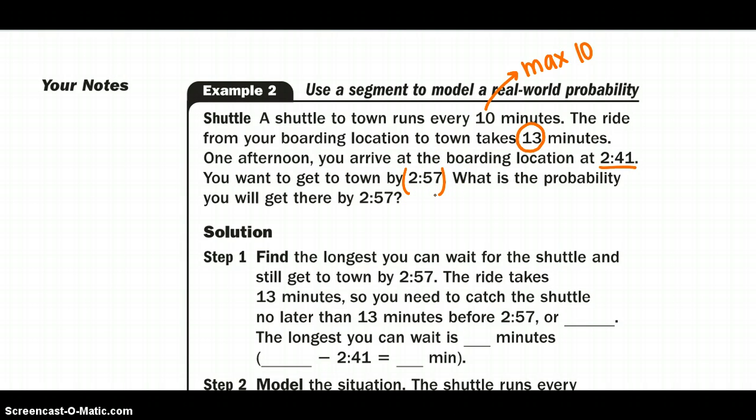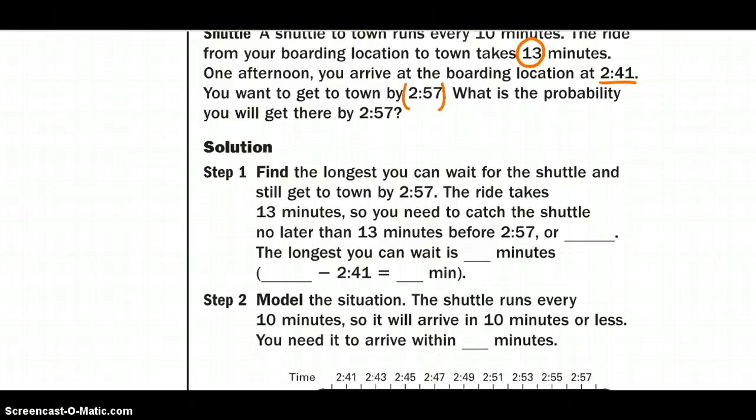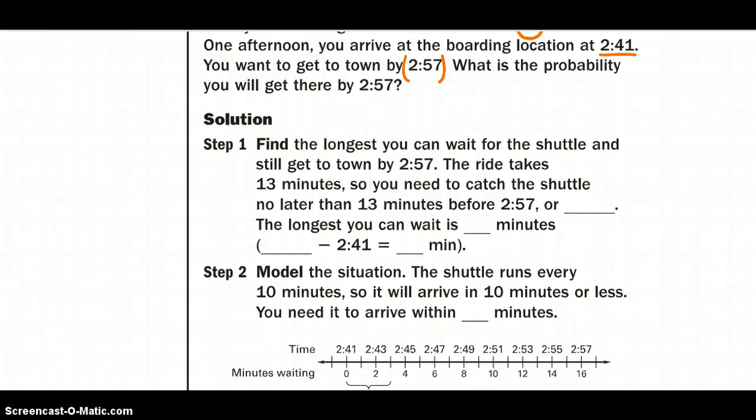One afternoon we arrive at 2:41 but we have a goal to get downtown at 2:57. We want to know what the probability of this situation might be. We didn't give ourselves a whole lot of time. So the longest you can wait for a shuttle to get to downtown we need to find. So we are going to almost work backwards. If we get downtown at 2:57 it takes us 13 minutes to get there for sure. So let's take the 13 minutes away because we have to include that in there.